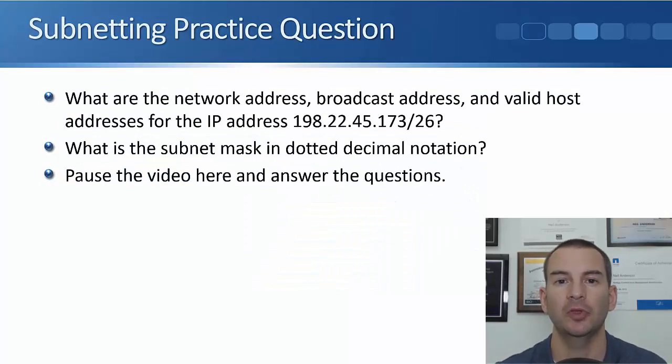Hopefully you've got a good handle on all of the subnetting information that we've covered so far and you'd be able to work your way through a subnetting problem. But let's actually verify that now by doing a practice question. So the question is, what are the network address, the broadcast address and the valid host addresses for the IP address of 198.22.45.173/26. And the second part of the question, what is the subnet mask in dotted decimal notation? So stop the video now please and figure that out. When you come back, I'll walk you through how we arrive at the answer.